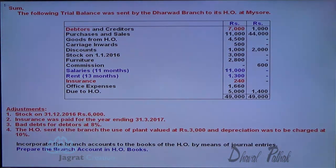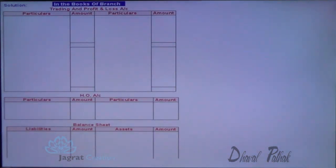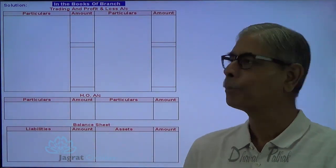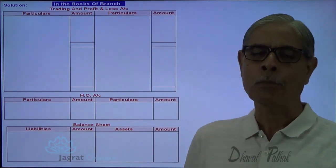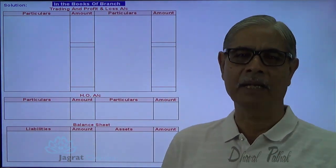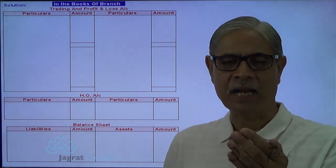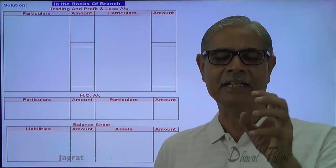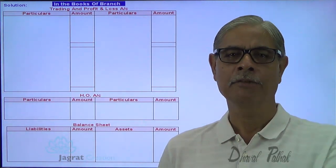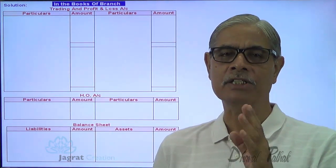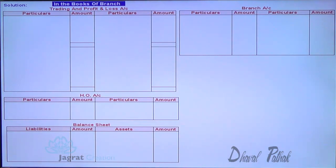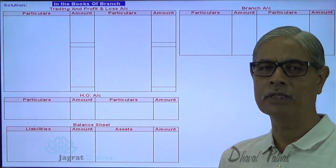Since we have been given a trial balance and adjustments, we shall first prepare the trading account, profit and loss account, and balance sheet for the branch. This can be prepared either by the branch itself or by the head office — both mean the same thing. After preparing that, HO will absorb the entire trading activity, profit and loss earnings, and all the assets and liabilities of the branch at the end of the year.